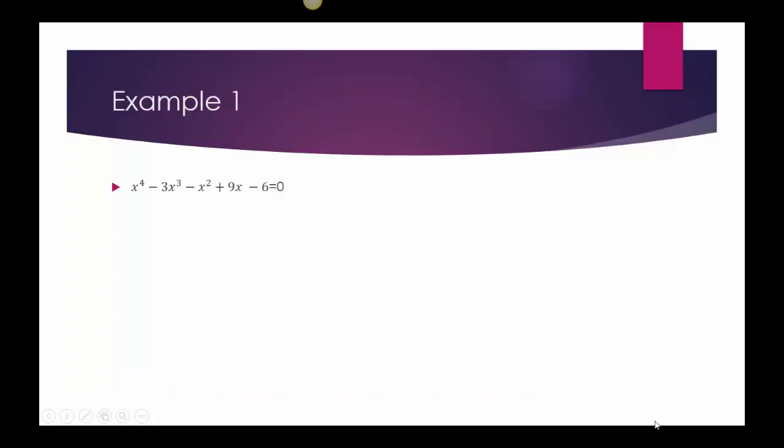So my first one looks like x to the fourth minus 3x cubed minus x squared plus 9x minus 6. We're expecting four solutions because it's a degree four equation, but let's start by talking about whether we expect to get positive or negative solutions.